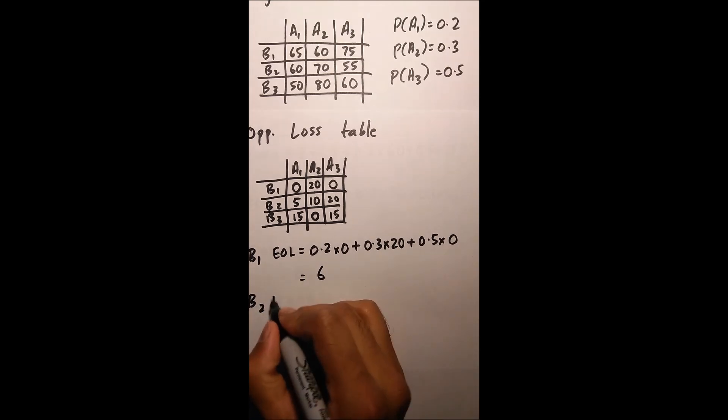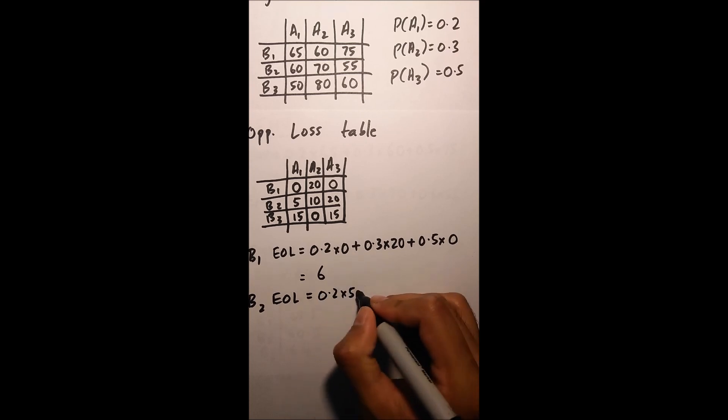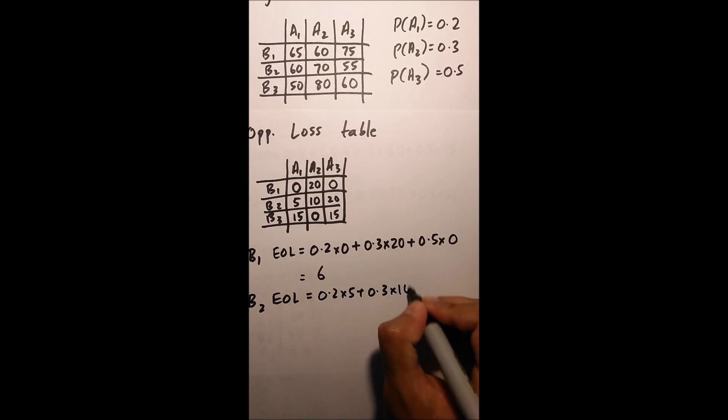My B2: 0.2 times 5 plus 0.3 times 10, plus 0.5 times 20, equals 14.